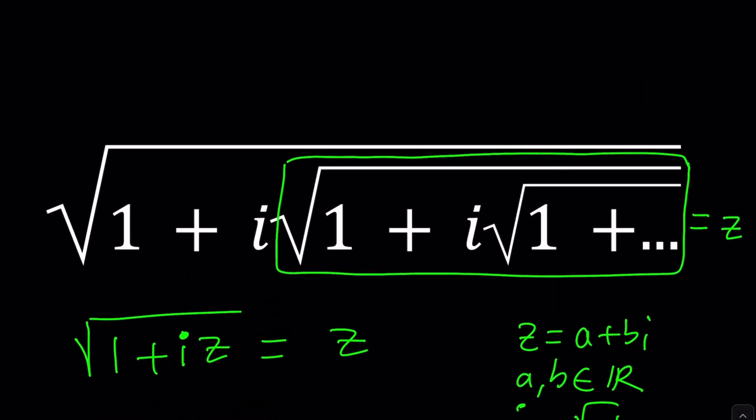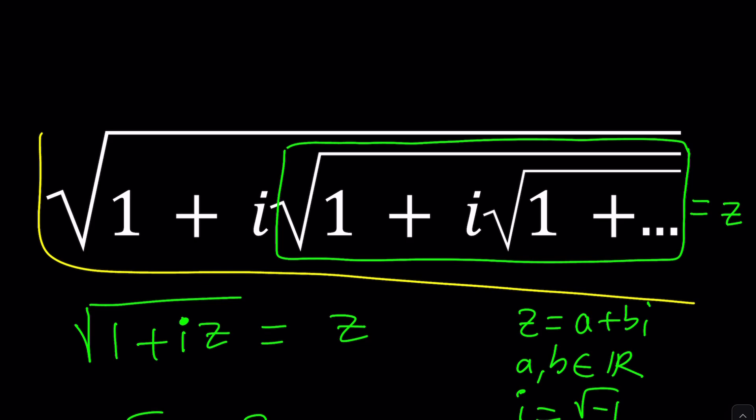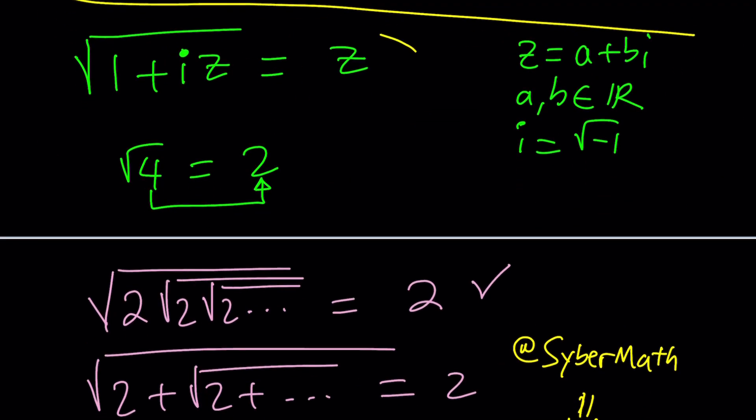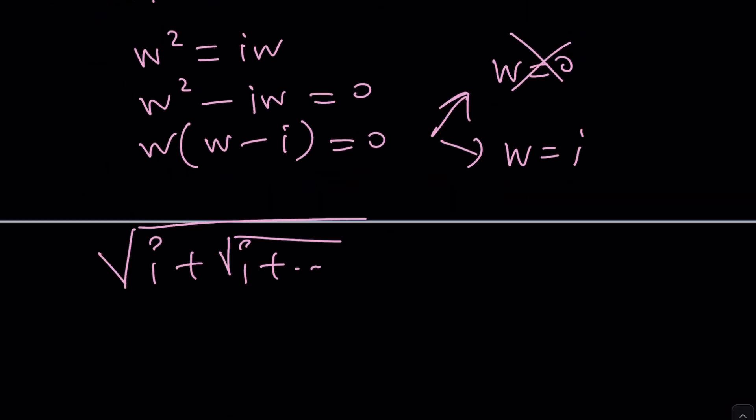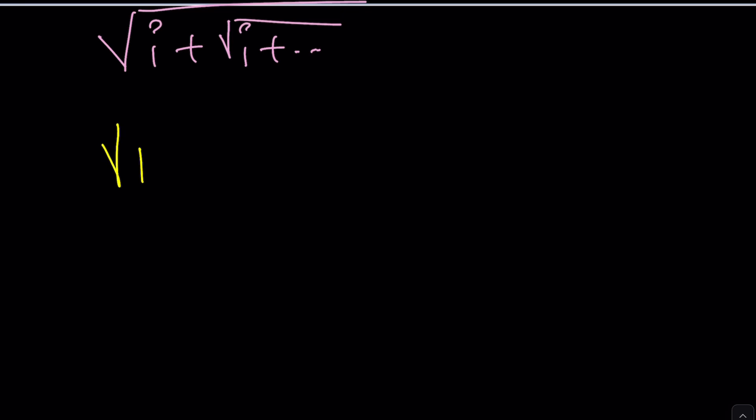After this little commercial break, this is what we have that gave us this. Let's take it from there. Square root of 1 plus iZ is equal to Z. I mean, I could put Z on the left hand side, but no big deal. This is what happened.